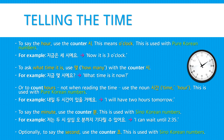To ask what time it is, you can use the word 몇, meaning 'how many', together with the counter 시. Literally: 'how many o'clock is it?' For example: 지금 몇 시예요? — What time is it now?